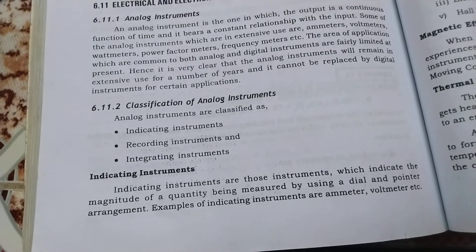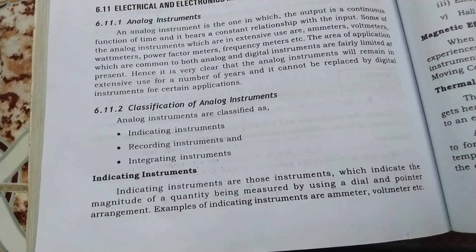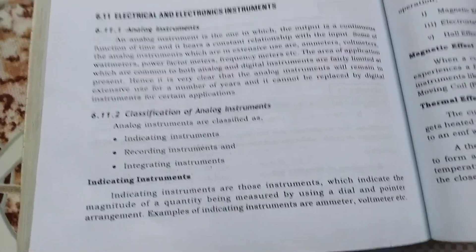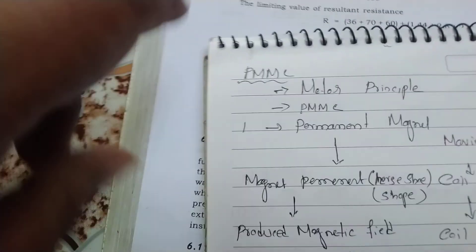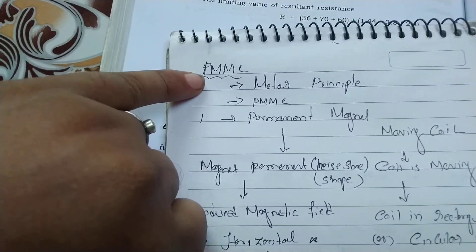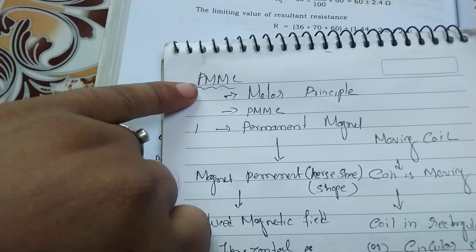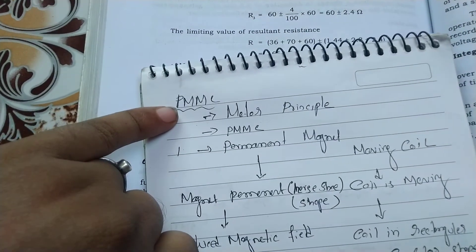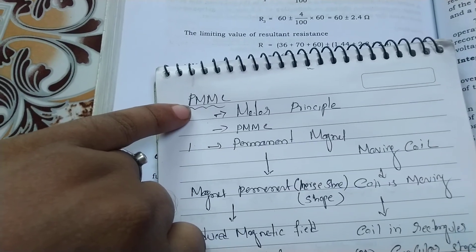PMMI means permanent magnet moving iron. PMMC means permanent magnet moving coil. Now for the PMMC instrument, the operating principle is the same as our motor principle — that is, a current carrying conductor placed in a magnetic field exerts a force. The same principle is used in the PMMC instrument.